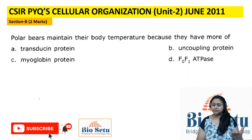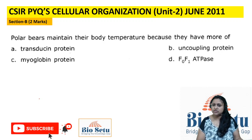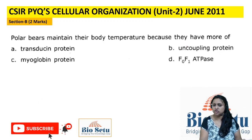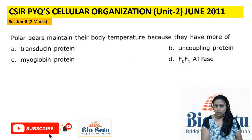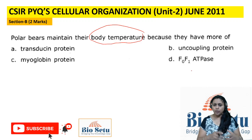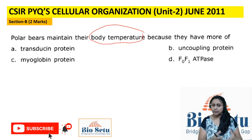Moving to the next question — again Section B, two marks, from June 2011: 'Polar bears maintain their body temperature because they have more of which of the following?' The options are related to uncoupling protein, transducing protein, and topics related to the electron transport chain.